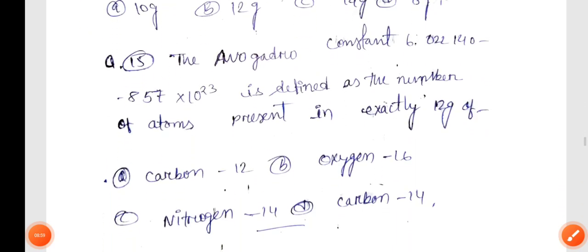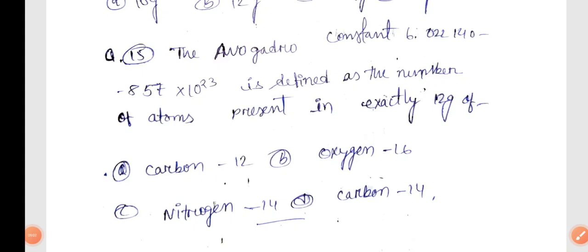Question 15, the last chemistry question: Avogadro's constant, 6.022 × 10^23, is defined as the number of atoms present in exactly 12 grams of carbon-12. The subject marks are: Physics 45, Chemistry 45, and Biology 20.